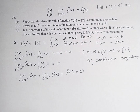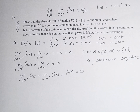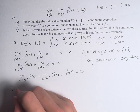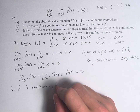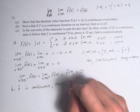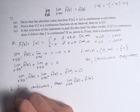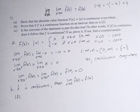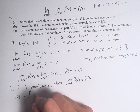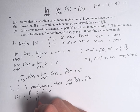Next, we have to prove the general statement: if f is a continuous function on an interval, then so is the absolute value of f. If f is continuous, then the limit as x approaches a of f of x equals f of a. The absolute value of f equals f if f is greater than or equal to 0, and negative f if f is less than 0.